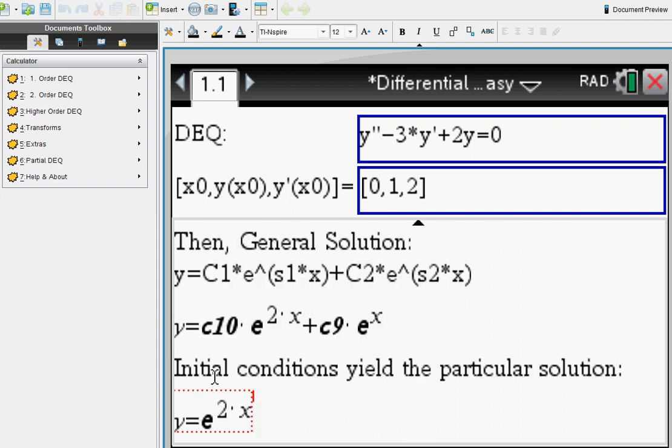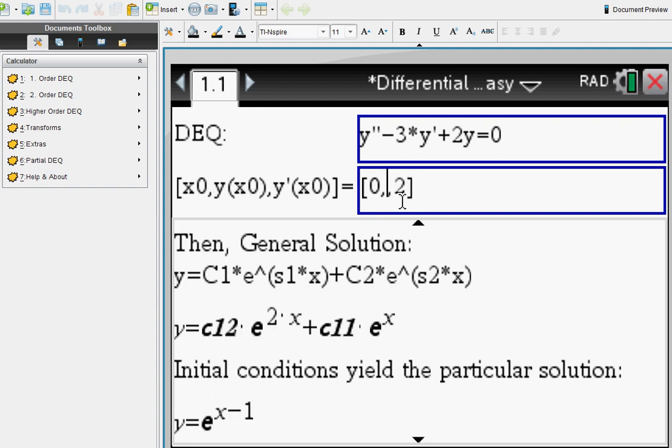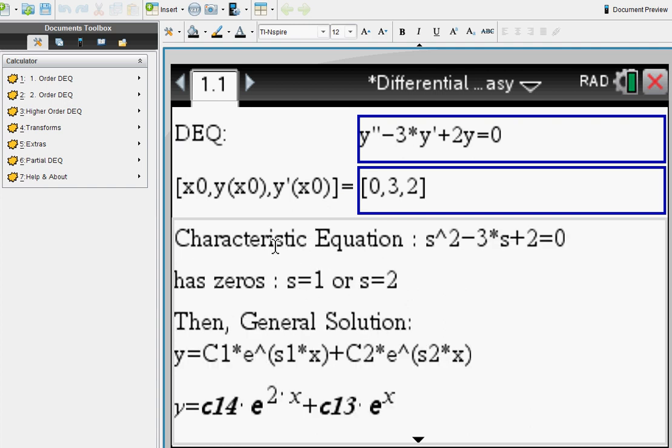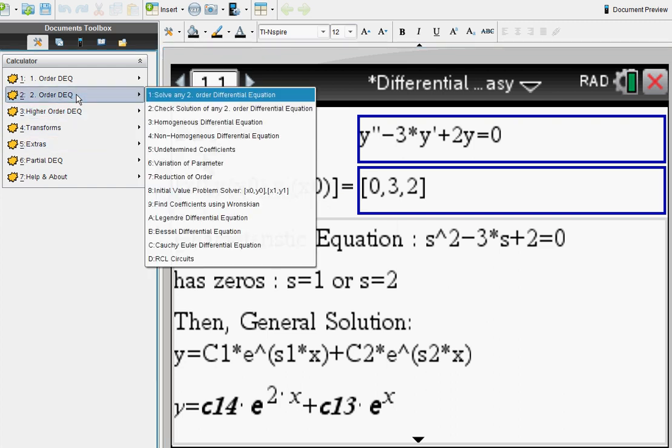Now based on your initial condition, you will end up with this particular solution. Let me show you if I change my initial condition. Well, that means your particular solution looks different, and you can recognize the exponents 1 and 2 as the zeros of the characteristic equation. Of course you can find undetermined coefficients, variation of parameters, everything done for you step by step.